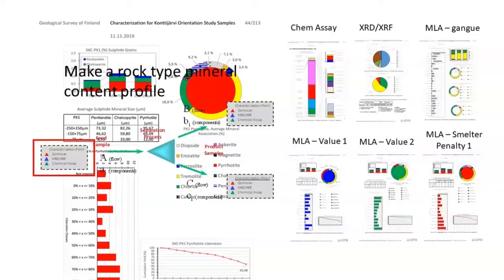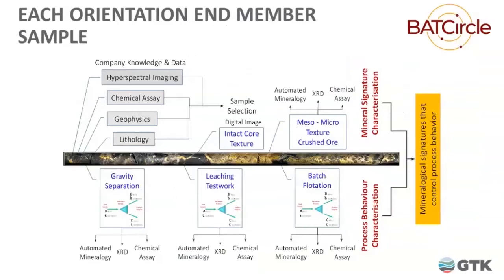For each orientation sample, we collect a lot of characterization data and any contextual information from the client. These often come from drill cores, which carry additional data such as assay data, geophysics, geotechnical information, and if we're lucky, hyperspectral imaging — which is becoming more common. We then run a series of process tests — gravity separation, leaching, or batch flotation — all coming off the same piece of core in a representative fashion on well-characterized ore. We characterize the products so we can perform a mass and mineral reconciliation of what went where in the sub-products.